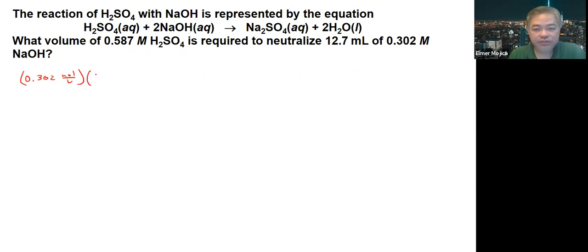Multiply it with the volume that's given, so use the 12.7 mL, convert it to liters with 1000 mL per liter, giving you the unit in moles. You will get around 3.85 times 10 to the negative 3 moles.